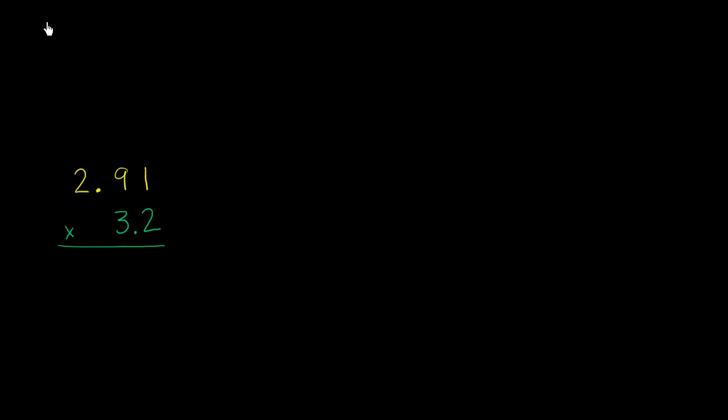The way I'm going to think about it is 2.91 is the same thing as 291 divided by 100. We know that if you divide something by 100, you're going to move the decimal place two places to the left. And you would end up at 2.91. It also makes sense. If I take 200 and divide it by 100, I would get 2. So it makes sense that 2.91 is the same thing as 291 divided by 100.